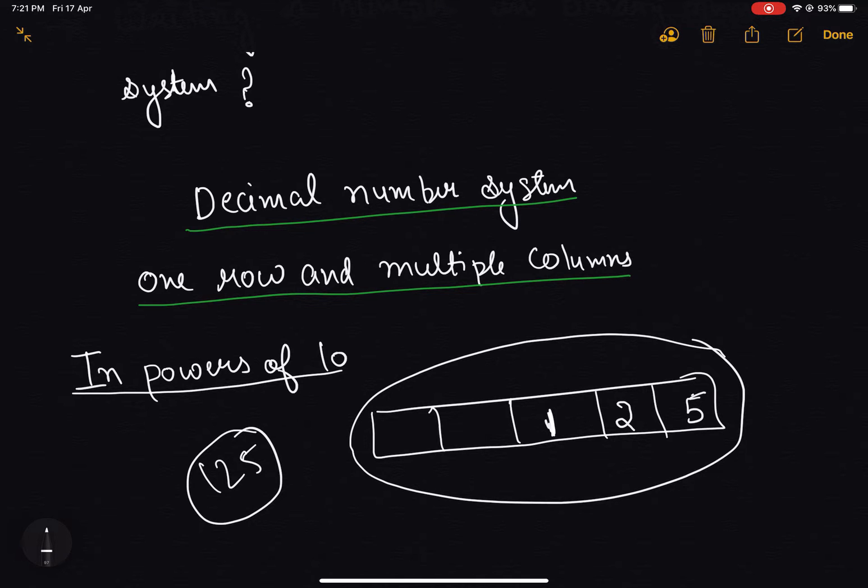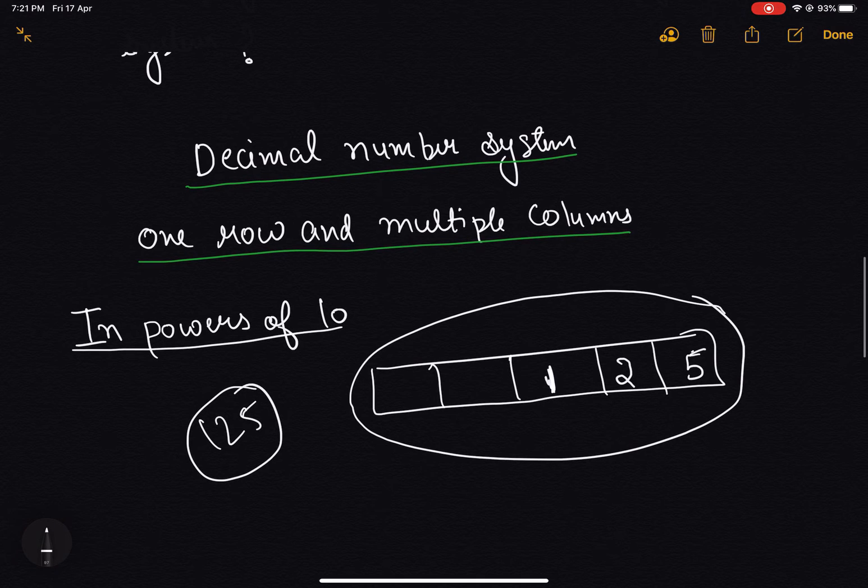And this has 1. So in powers of 10, what I could write is that this rightmost digit is equal to 10 to the power 0. And this may be called as 10 to the power 1 and this may be called as 10 to the power 2.